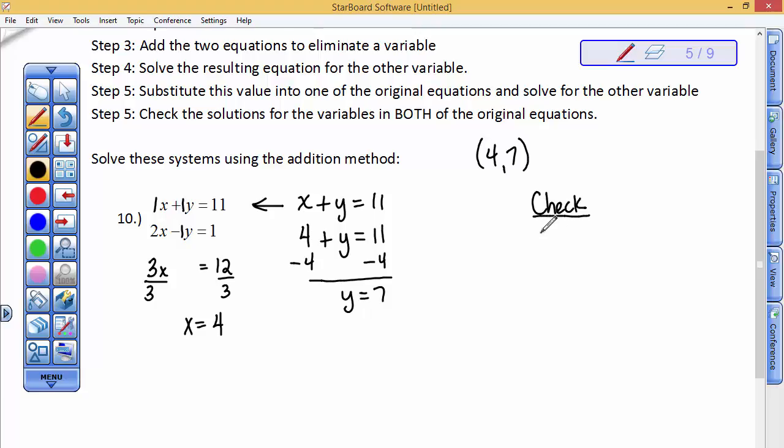check even in the equation you just used. So that equation said x plus y equals 11, so see if 4 plus 7 equals 11. And then 2 times x, so 2 times 4, minus y, which is 7, does that equal 1? So does 8 minus 7 equal 1? It sure does, so I know I got it correct.